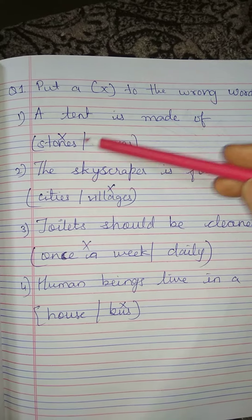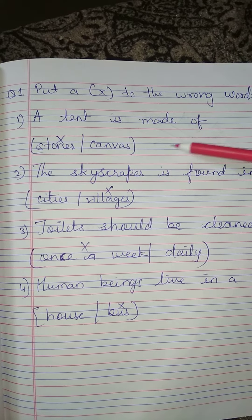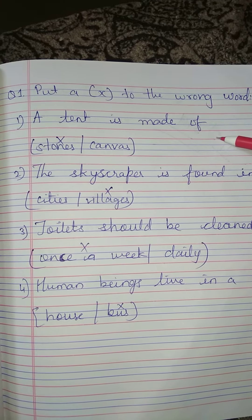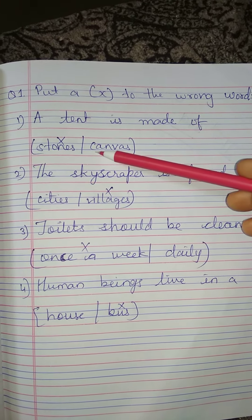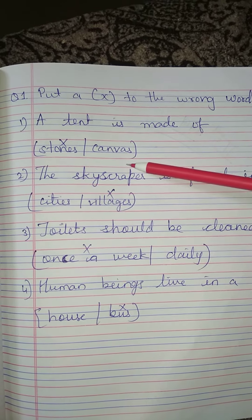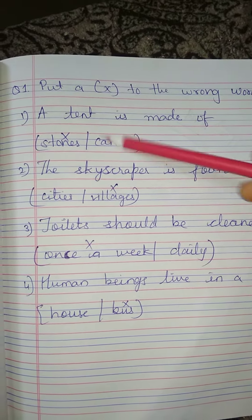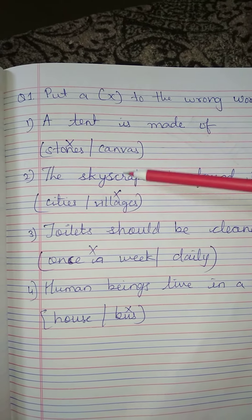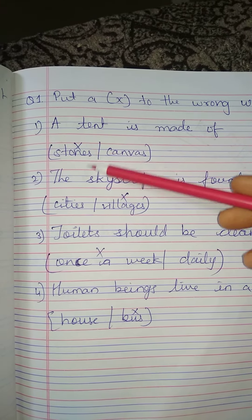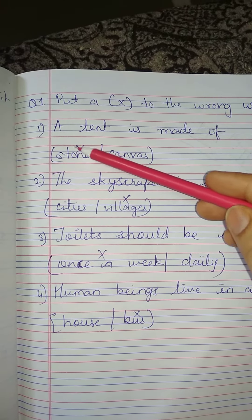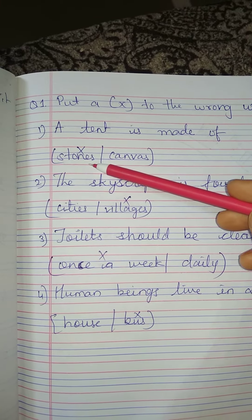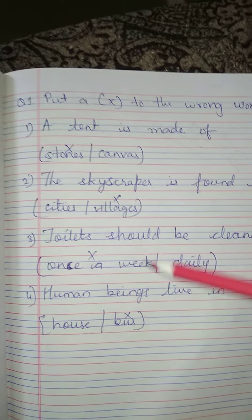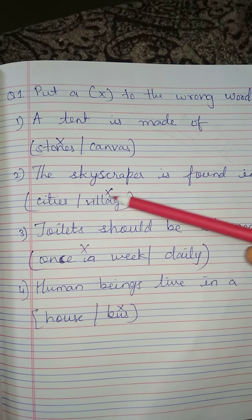Number 1: A tent is made of stones and canvas. The wrong word here is 'stones' — a tent is made of canvas. So we make a cross on 'stones'.